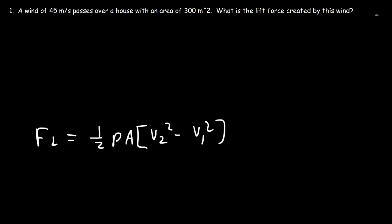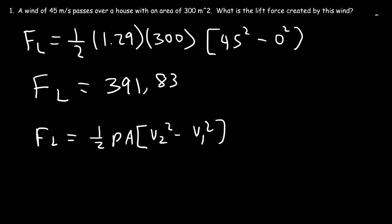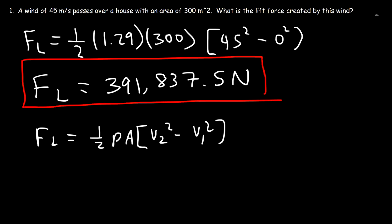Now let's calculate the lift force. The density of air at 0 degrees Celsius is 1.29 kg/m³. The area is 300 square meters. V2 is 45 m/s and V1 is 0. So: 0.5 × 1.29 × 300 × 45² gives us a lift force of 391,837.5 newtons. That's how you calculate the lift force when given the wind speed.